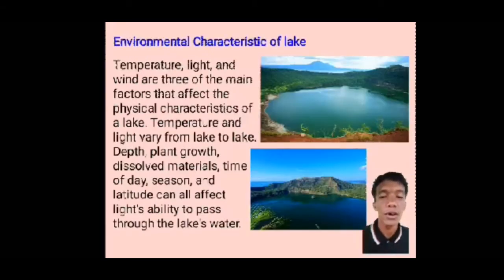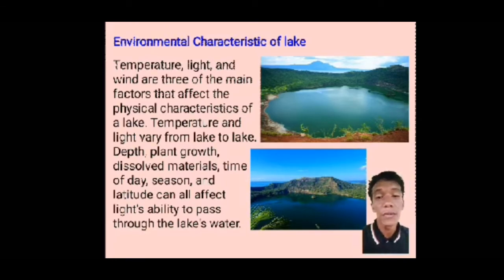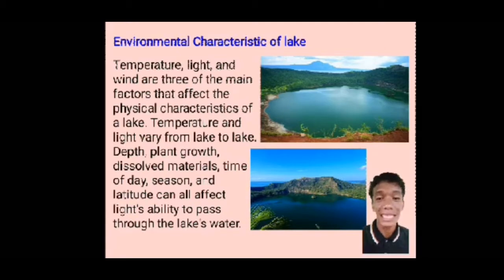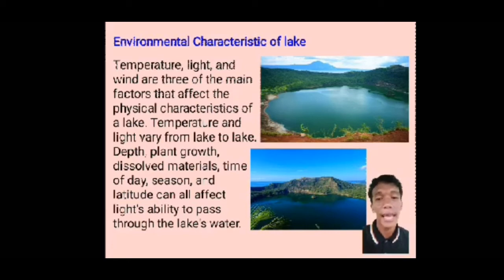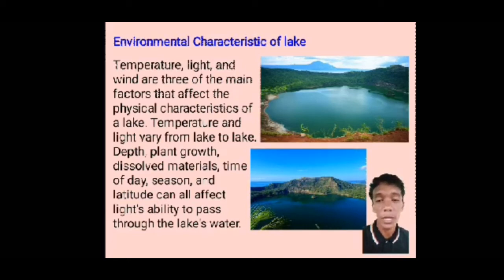Environmental characteristics of lakes: temperature, light, and wind are three of the main factors that affect the physical characteristics of a lake. Temperature and light vary from lake to lake. Deep plant growth, dissolved materials, time of day, seasons, and latitude can all affect light's ability to pass through the lake's water.